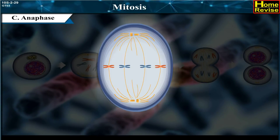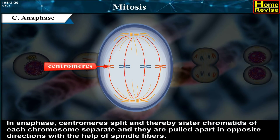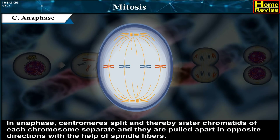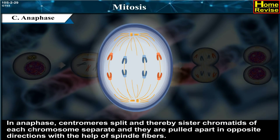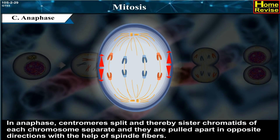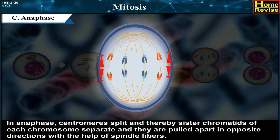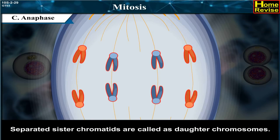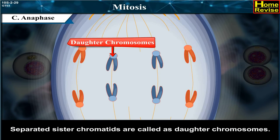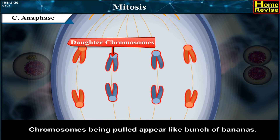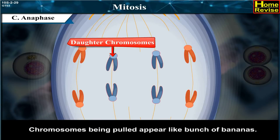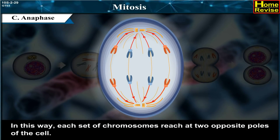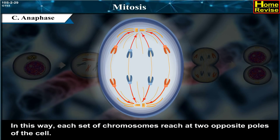In Anaphase, centromeres split and thereby sister chromatids of each chromosome separate and are pulled apart in opposite directions with the help of spindle fibres. The separated sister chromatids are called daughter chromosomes. Chromosomes being pulled appear like a bunch of bananas. In this way, each set of chromosomes reaches the two opposite poles of the cell.